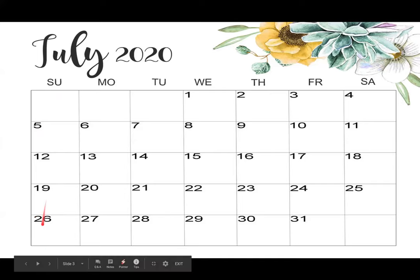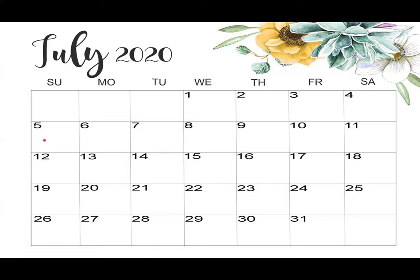Similarly, let's count the Thursdays. Th is for Thursday. We look down that column and count: one Thursday, two Thursdays, three Thursdays, four Thursdays — there are 4 Thursdays in July as well.